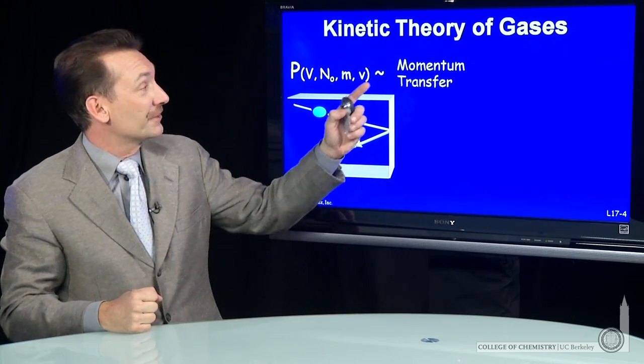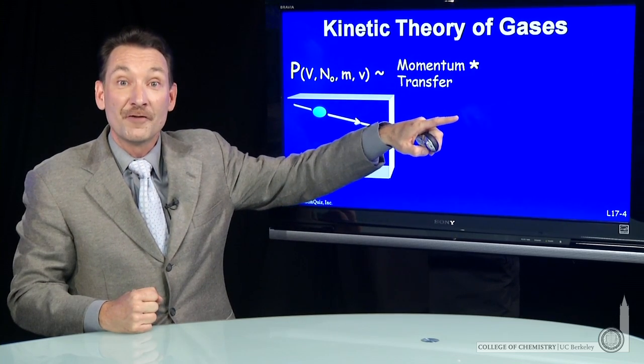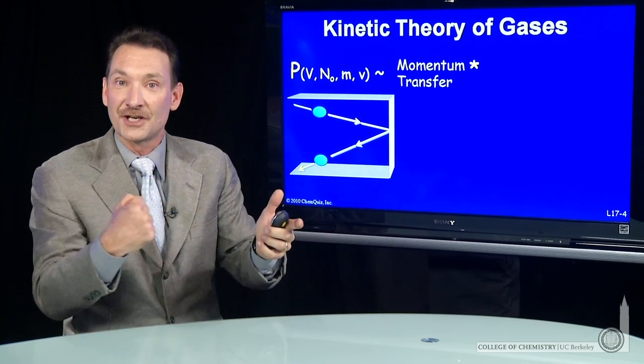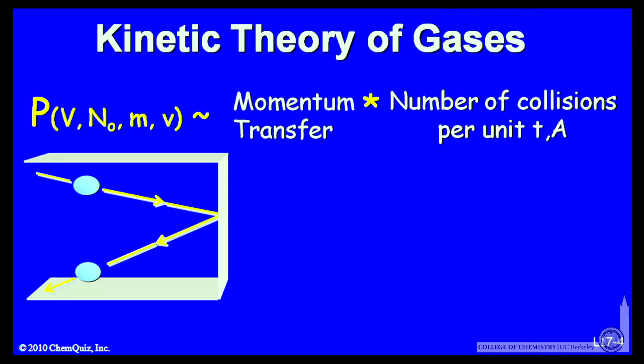So we're going to talk about a momentum transfer component times the number of particles per unit time per unit area that hit a section of the wall. So the momentum is about m times v transferred to the wall per collision.